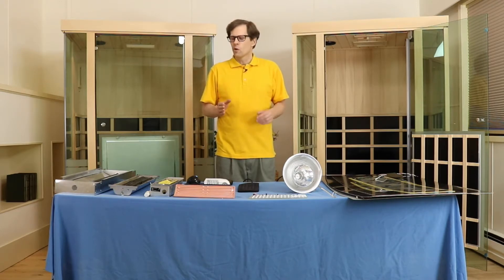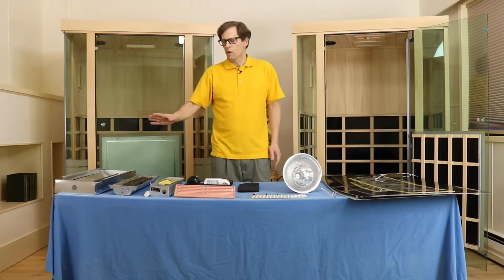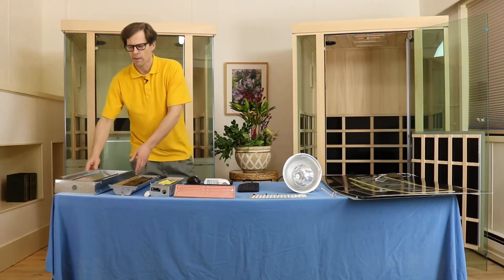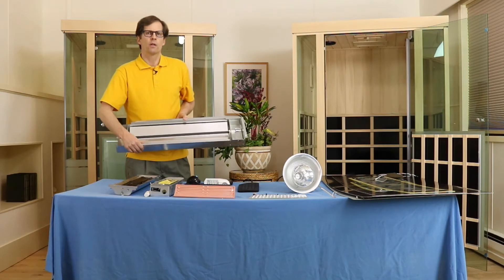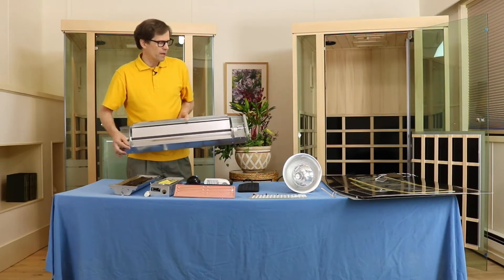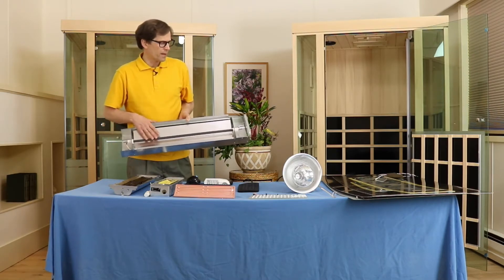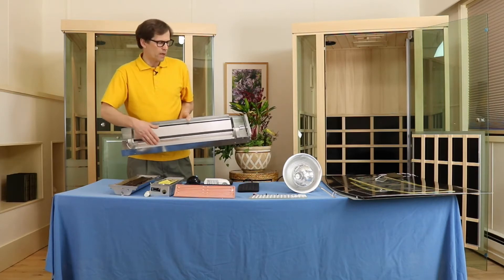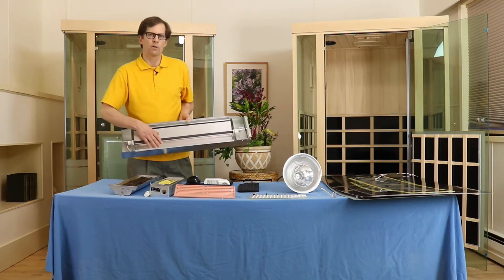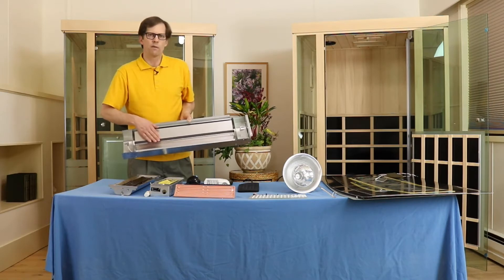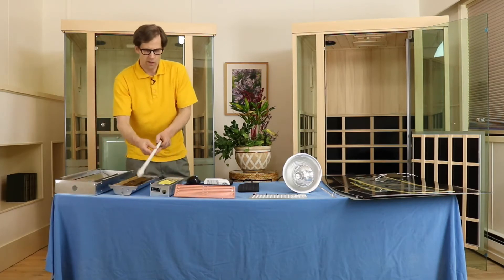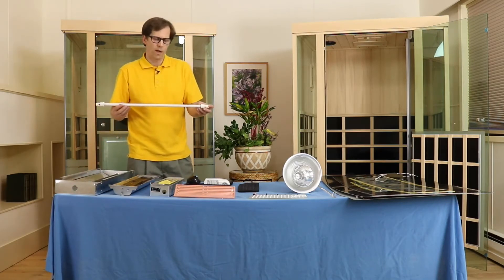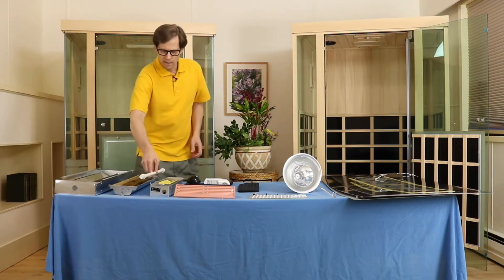Starting over here on my right, chronologically the first heater is a ceramic tube type heater. Infrared saunas started up in Japan and Korea, and probably the original heater used was this black ceramic tube. It's mounted in a metal housing with a reflector behind it. Some of these tubes had different minerals inside of them.